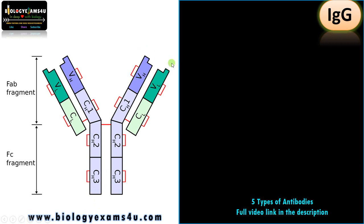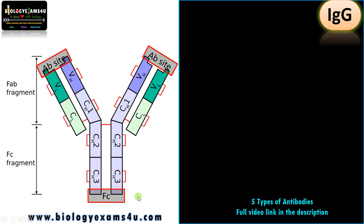This variable region is responsible for the specificity of antibodies. There are two antigen binding sites for IgG, and the FC region binds to effector molecules or activates the complement system. IgG is designated as H2L2 as it is made up of two heavy chains and two light chains, and the C represents the constant region within this antibody.